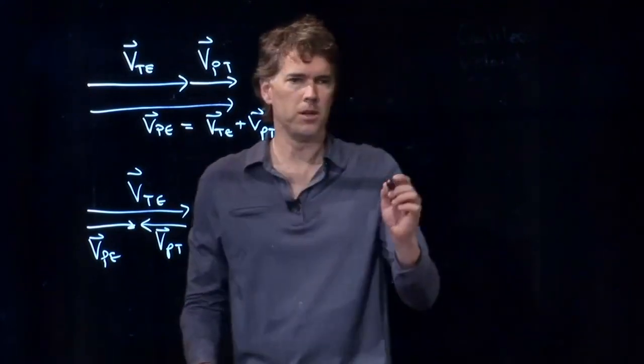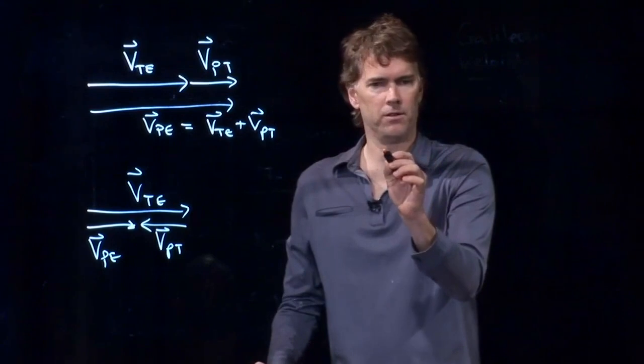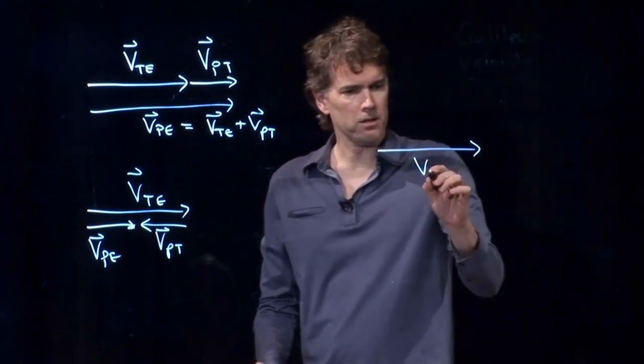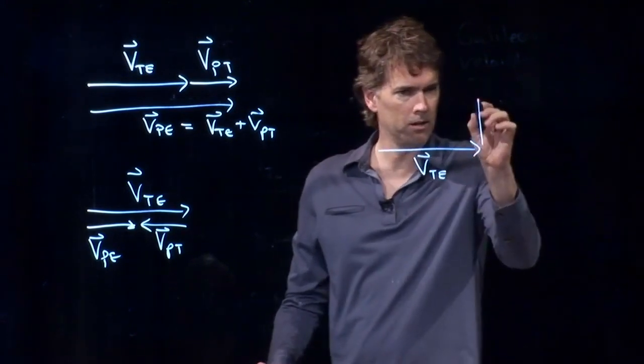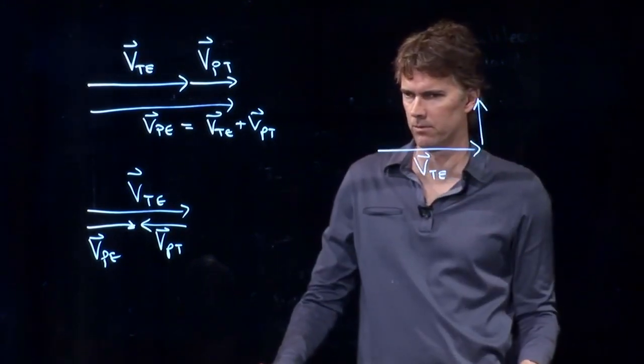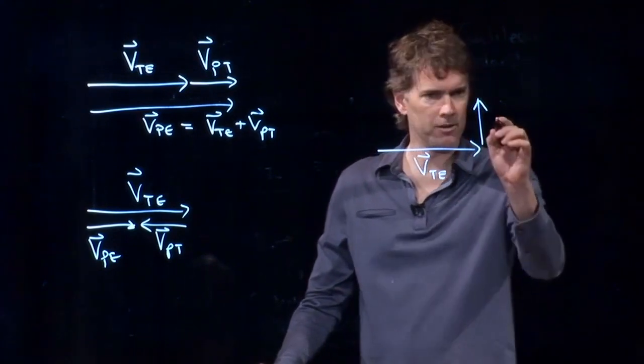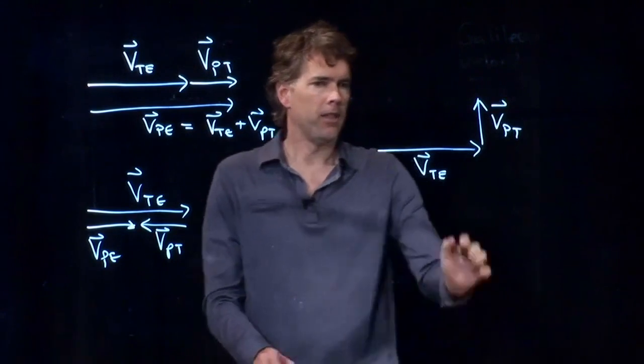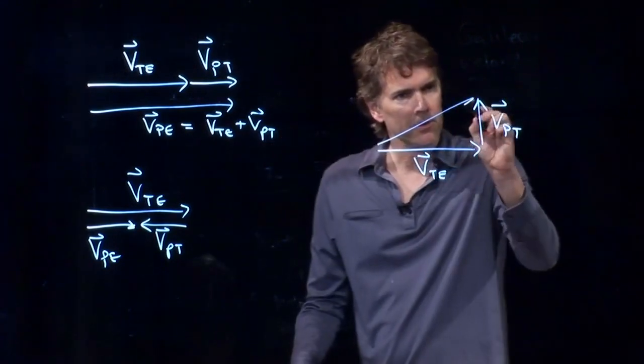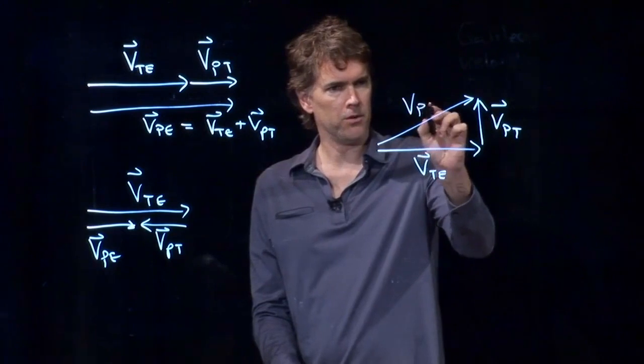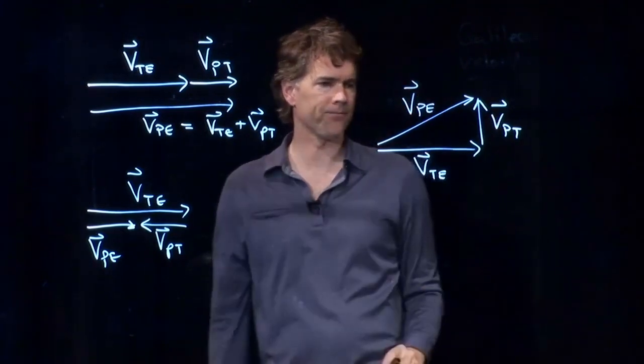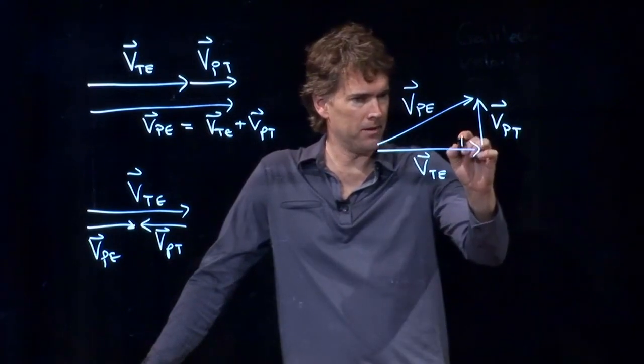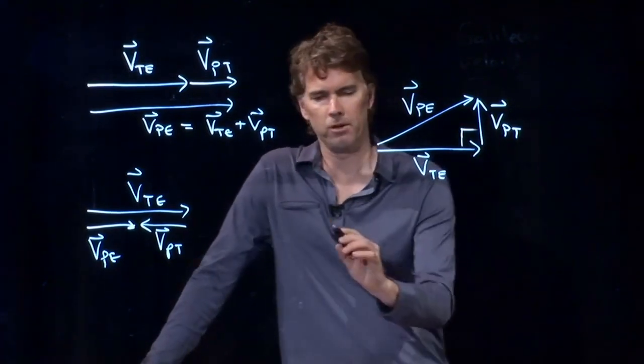But, of course, we don't have to add those vectors in the same direction. You could be walking sideways relative to the train. And so this would be V person relative to the train, and therefore the sum of those two is right there. This is V person relative to the Earth. And in this case, if this is the right angle, now we can solve this.